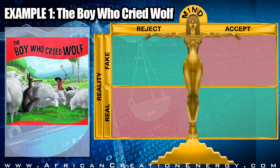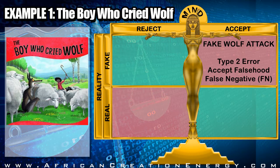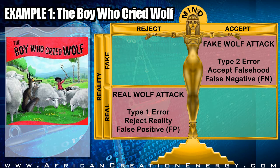Let's look at a few examples. First, the famous fable from the Ethiopian storyteller Aesop called 'The Boy Who Cried Wolf.' A shepherd boy repeatedly tricks the villagers by claiming a wolf is attacking; they rush to his aid only to find it was a trick. After the boy plays the trick several times, a real wolf attacks but the villagers do not believe him and do not come to help, so the wolf eats the sheep. In the cases where the wolf attack was fake but the villagers believed the boy, those were false negatives — type 2 errors, where you accept falsehood. When the wolf attack was real but the villagers did not believe the boy, that was a false positive — a type 1 error, where you reject the truth.